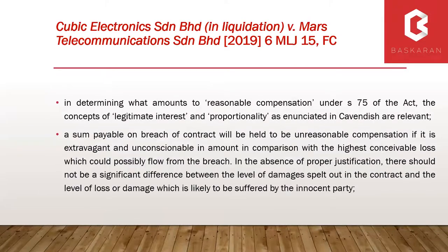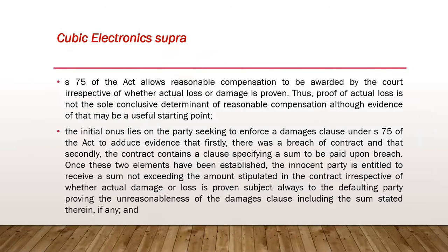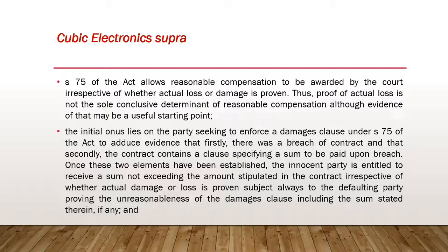That previous position recently changed with the judgment of the Federal Court in Cubic in 2019. Essentially, the onus of proof has shifted. All that is required for the employer now is to prove: first, that there has been a breach of contract; and second, that there is a liquidated damages clause in the contract. With that, the employer would be entitled to recover liquidated damages. He is no longer obliged to prove actual loss — the onus shifts to the contractor, who must prove that the liquidated damages specified in the contract is unreasonable.